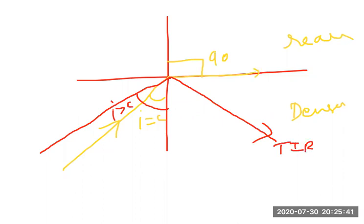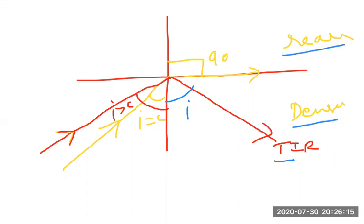When the angle is a little greater than the critical angle, the ray reflects back in the same medium. The ray does not pass into the rarer medium; it comes back to the same medium. This is called Total Internal Reflection.